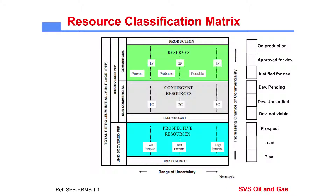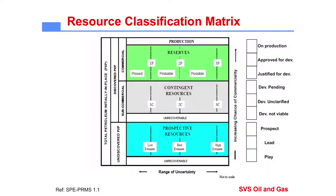So, the volumes that you have found will remain in this contingent category, and the contingent resource category also has three ranges: 1C, 2C, 3C. And these could be valued anywhere from a dollar to maybe three or four dollars per barrel. So you can see the difference already — you've made a discovery from the exploration, you move to the contingent, and the value is already increased.